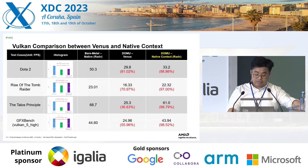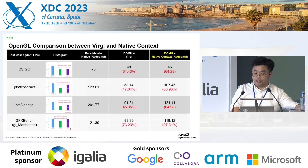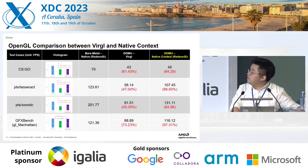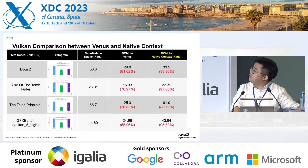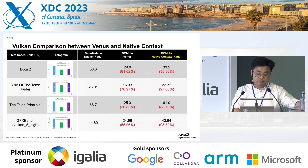Here is the performance data. We see OpenGL is much faster — about 10% improvement over VirGL and Venus. From the Vulkan side, native context also shows over 10% improvement over Venus.